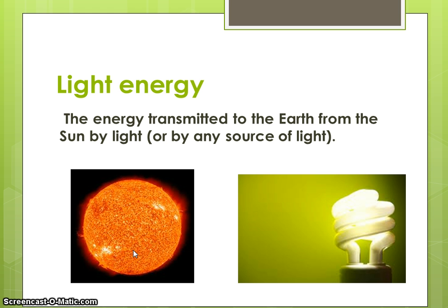The next one is light energy. Light energy is any visible light that you see — it comes from the sun, which is where we get most of our visible light. We can also create visible light with light bulbs. If you have a bonfire, your bonfire not only gives off heat energy — thermal energy — it also gives off light energy.